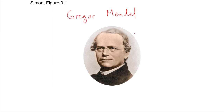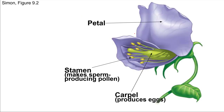Why pea plants? Well, pea plants are really easy to grow. They come in different varieties that can be easily distinguished from each other just visually — like you can tell whether a pea plant makes flowers that are purple in color or that are white in color. It's really easy at a quick glance to see the difference between those different varieties. It's also really easy to control their reproduction. To explain that a little bit, let's look at a picture of a pea plant flower here.